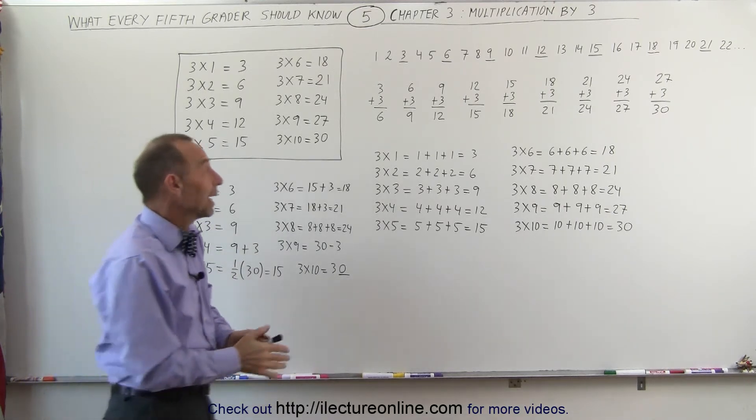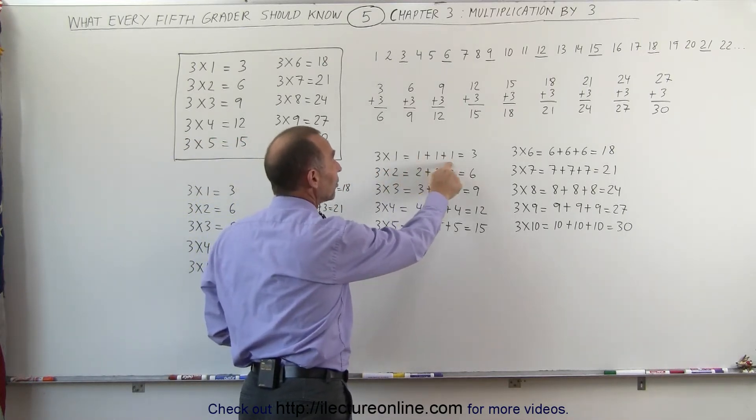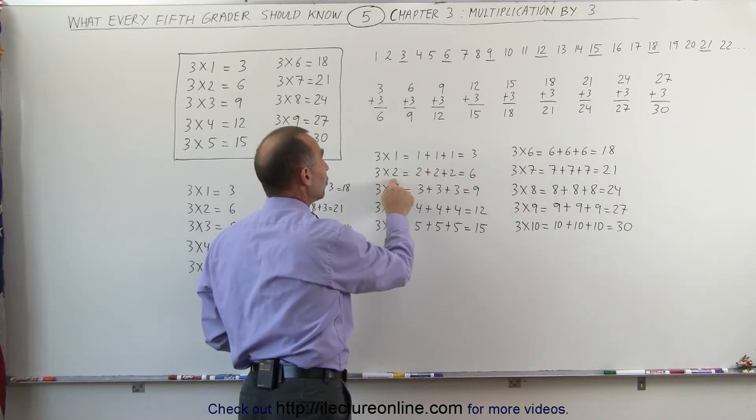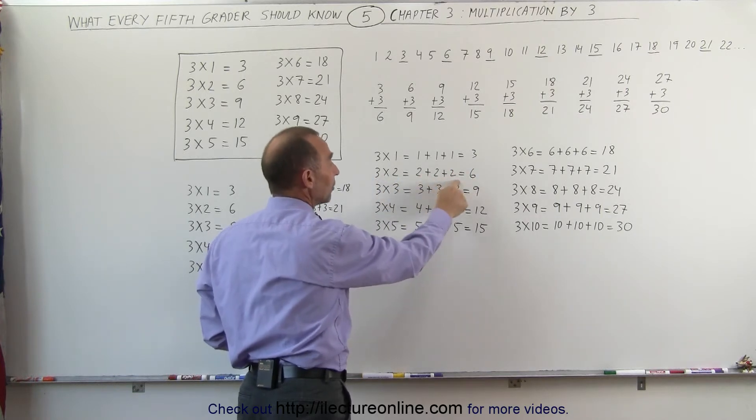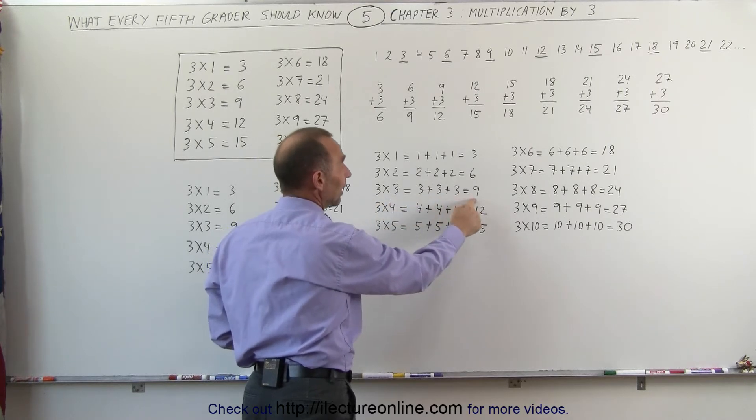Another way of looking at multiplication is to simply say that 3 times 1, you have 3 ones, you add them together, you get 3. 3 times 2 means you have 3 twos, add them together you get 6. 3 times 3 you have 3 threes, add them together, you get 9.